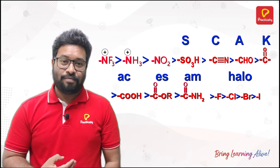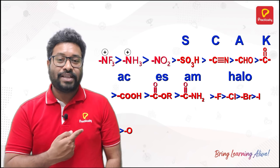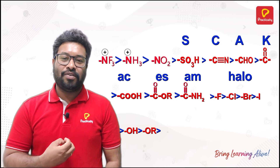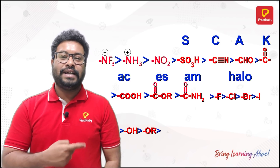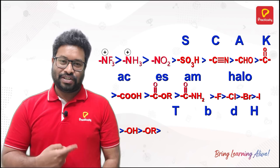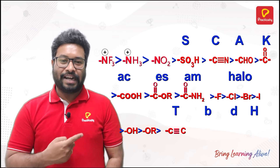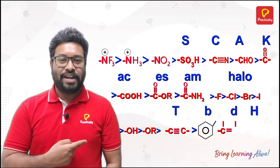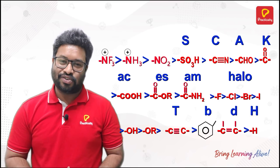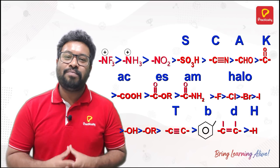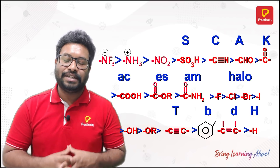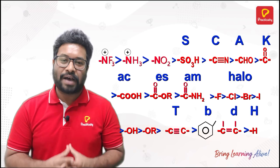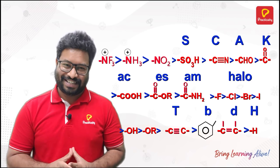Then that is followed by OH, OR. And lastly, you are going to have TBDH: T for triple bond, B for benzene, D for double bond, and H for hydrogen. I hope now it will be helpful for you to remember all the minus I groups at once.